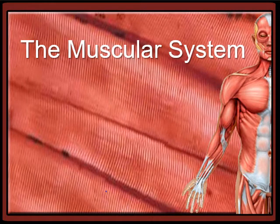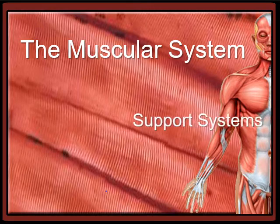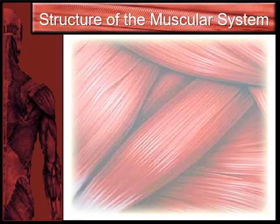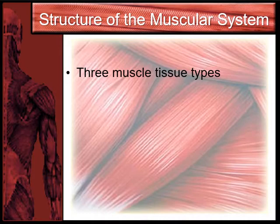We're going to continue talking about the muscular system. Still in support systems, this time we're going to talk about types of muscle tissue. This is the beginning of our structures of the muscular system discussion. We talked already about the functions of the muscular system, but now we want to talk about the structures — the things that the muscular system is made of. So we need to know the three types of muscle tissue.